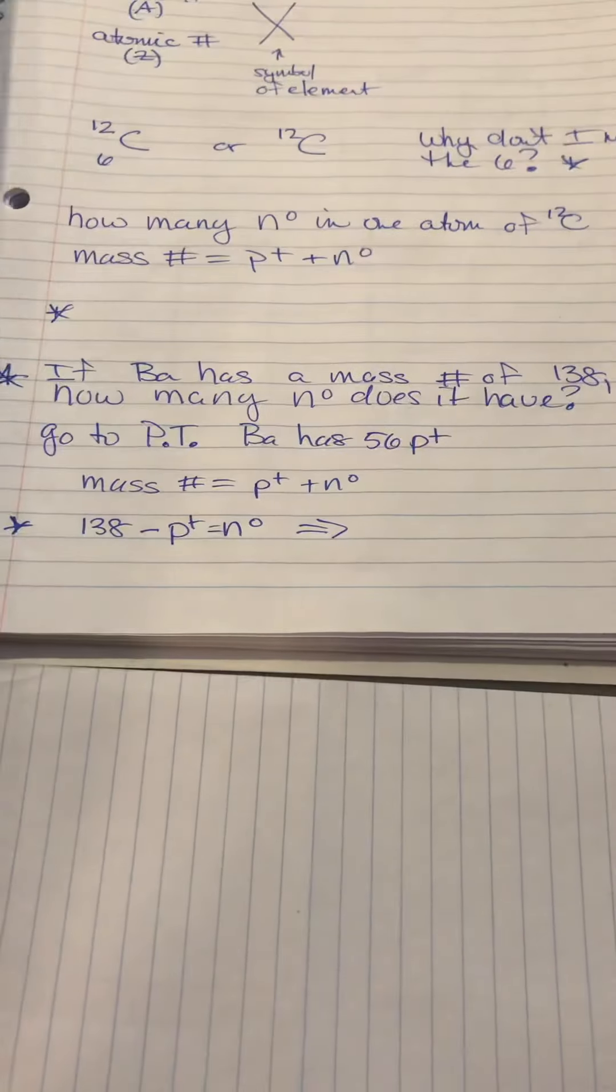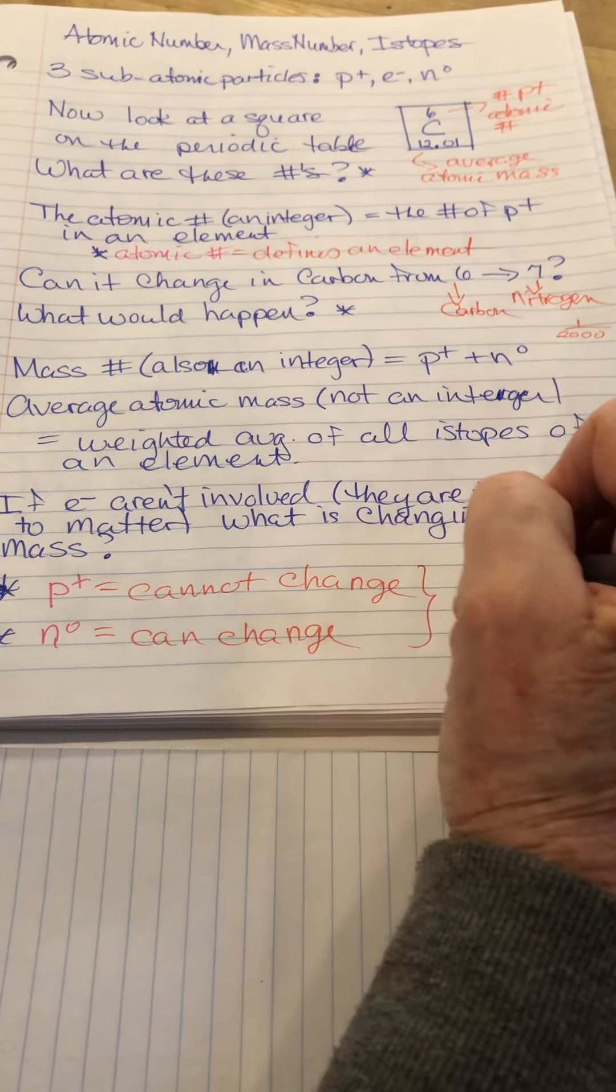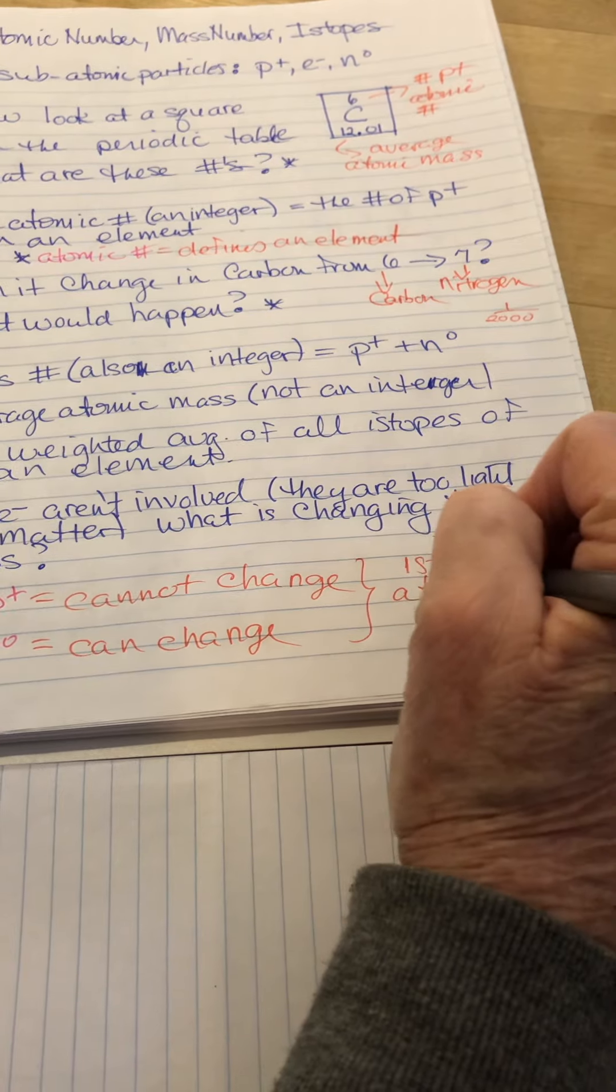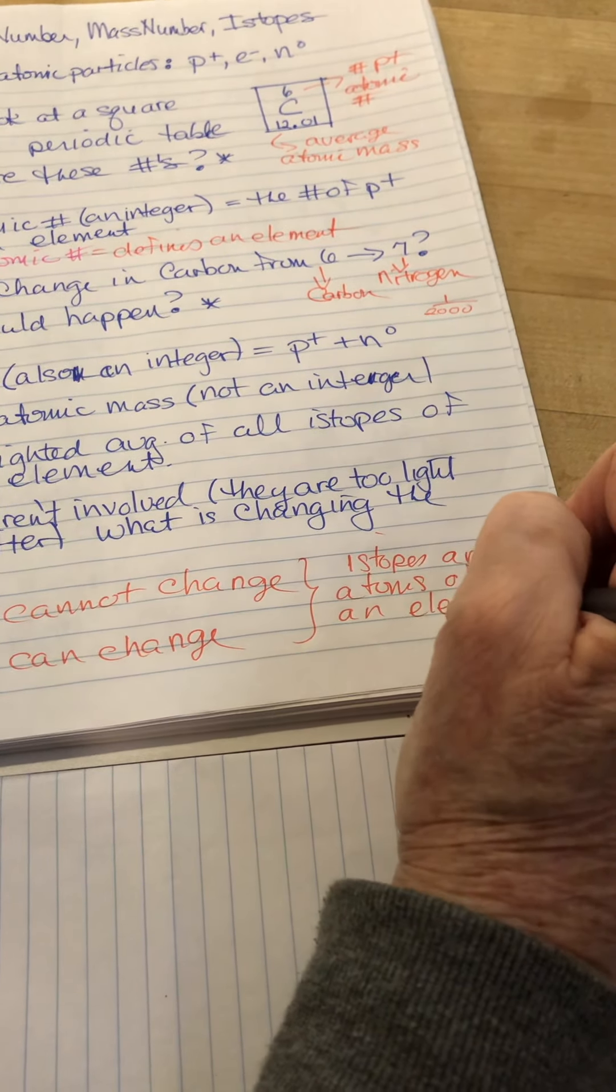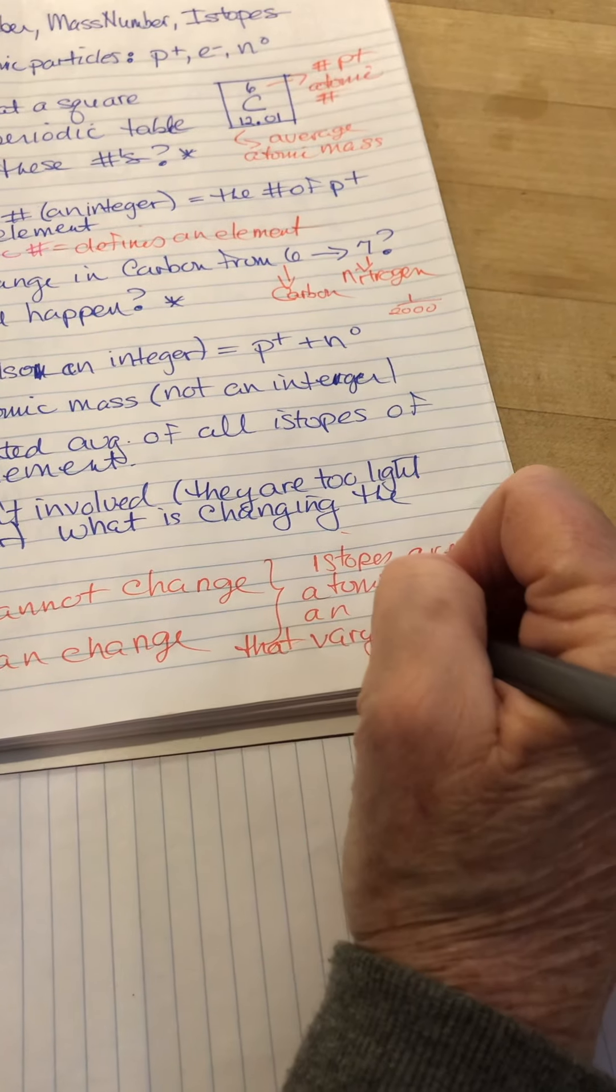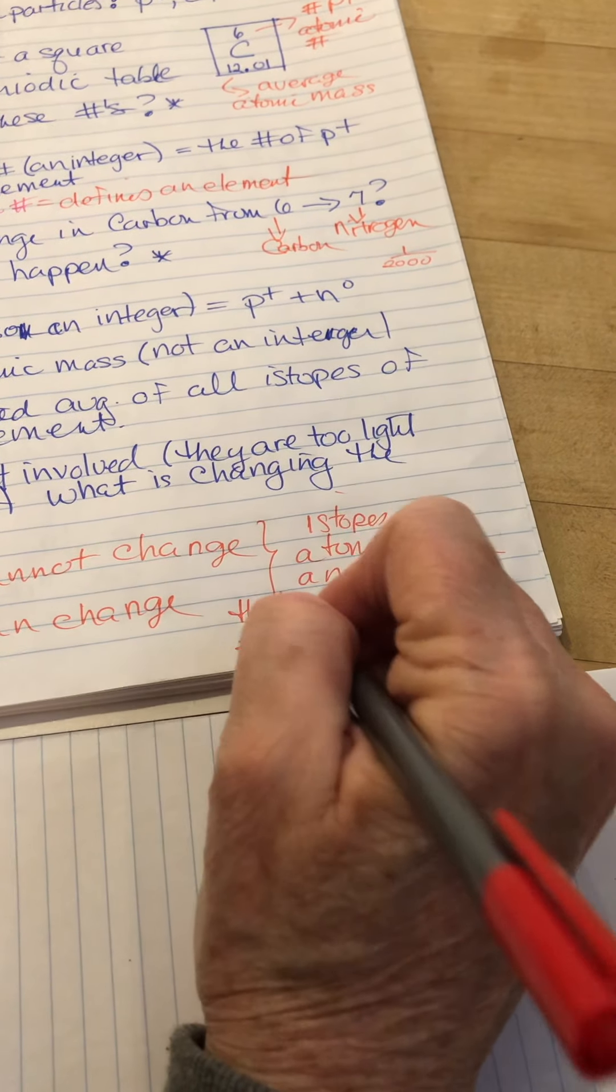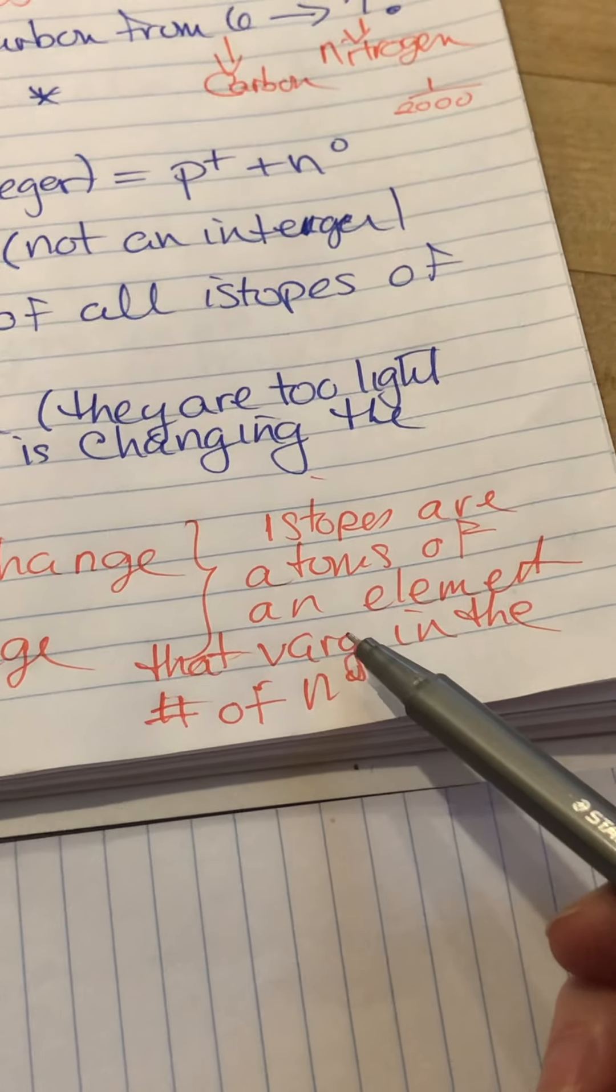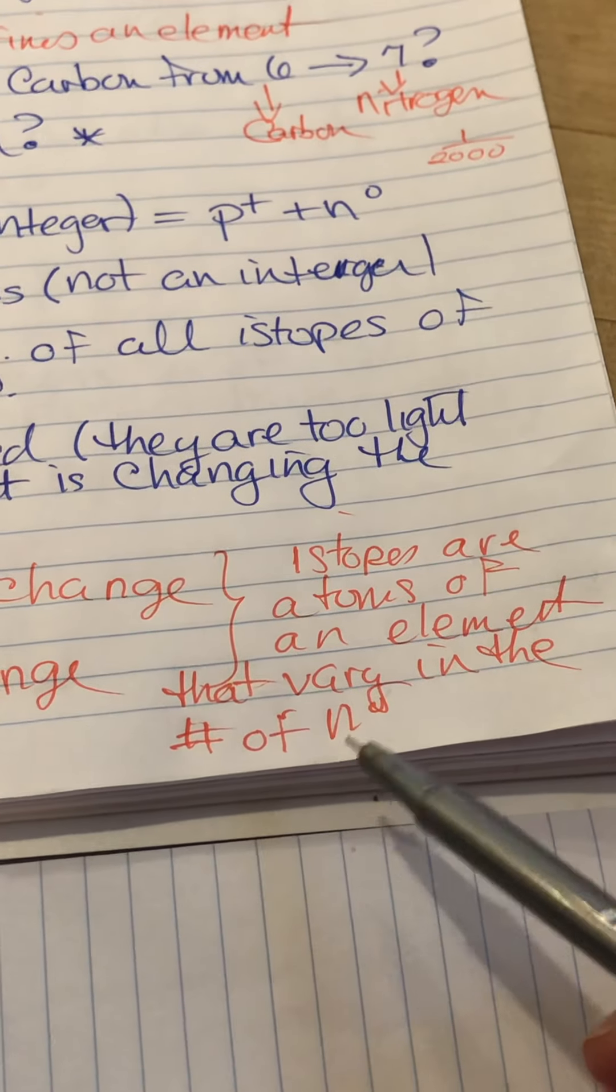So when we have an isotope... Isotopes are atoms of an element that vary in their mass number or vary in their number of neutrons. Isotopes of an atom, isotopes are atoms of an element that vary in the number of neutrons.